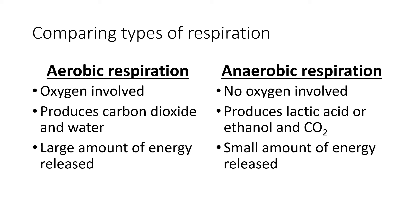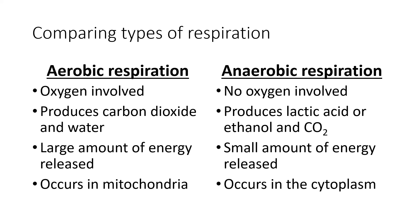In aerobic respiration, that chemical process results in the release of a lot of energy. In anaerobic respiration, the process only releases a small amount of energy. You also need to know where they occur: aerobic respiration occurs in the mitochondria, whereas anaerobic respiration occurs in the cytoplasm. Remember, the cytoplasm is the liquid found inside all cells.